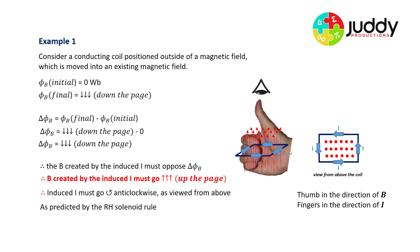Alternatively, if we use the right hand on the side profile of the coil, the thumb is in the direction of the magnetic field and again the fingers curl in the direction of the current.